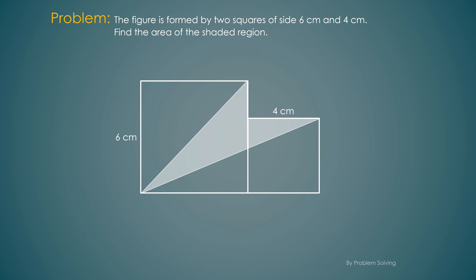This is the problem: the figure is formed by two squares of size 6 centimeters and 4 centimeters, and we have to find the area of the shaded region. Pause the video if you would like to give it a try and continue once you have your answer.